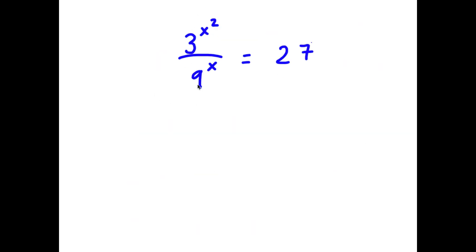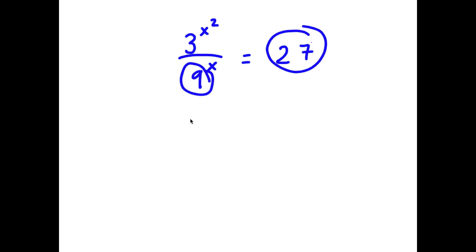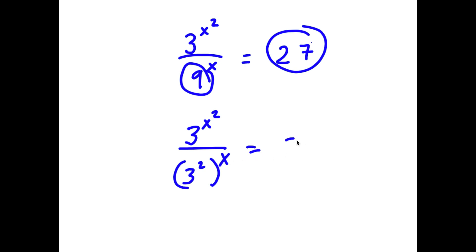Alright, so in this problem, I have 3 to the power of x squared over 9 to the power of x is equal to 27. So I'm first going to start by rewriting 9 as 3 squared and 27 as 3 cubed. So now I have 3 to the power of x squared over 3 squared to the power of x is equal to 3 to the power of 3.